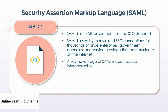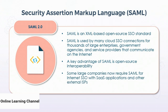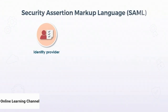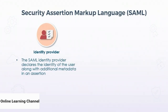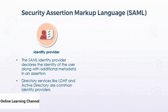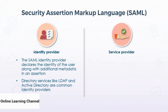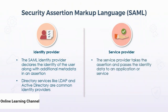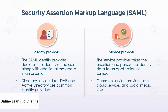A key advantage of SAML is its open-source interoperability, seen in both the public and private sectors. Some large companies now require SAML for internet SSO with software-as-a-service applications and external ISPs. With SAML, you have an identity provider (IDP) that declares the user's identity along with additional metadata in the form of an assertion. Directory services like LDAP and Active Directory are common identity providers. Service providers such as AWS take the assertion and pass identity data to an application or service; common service providers include cloud services and social media sites.